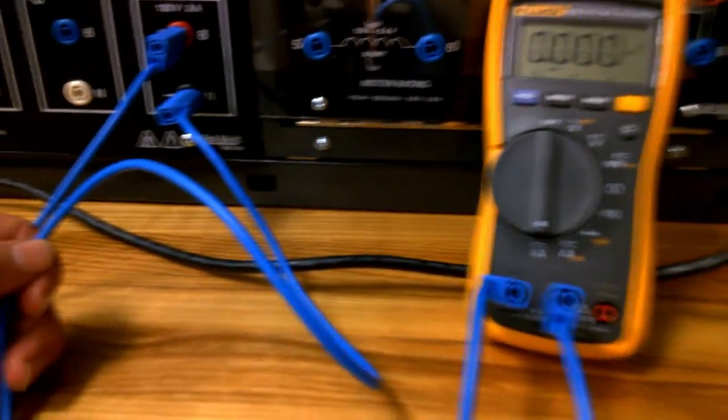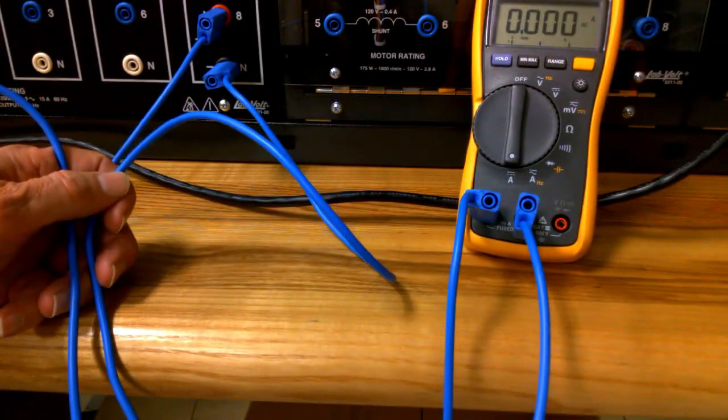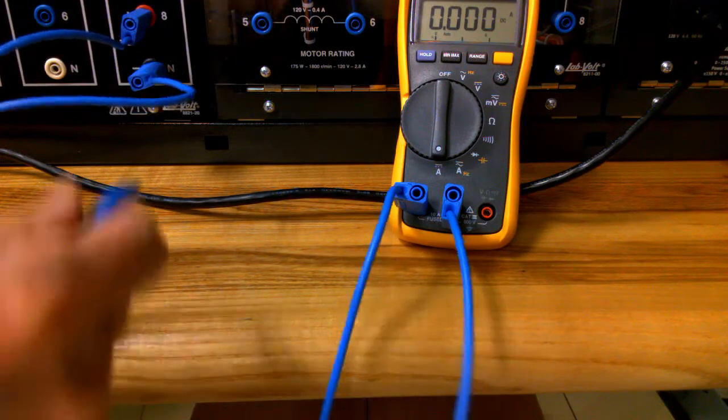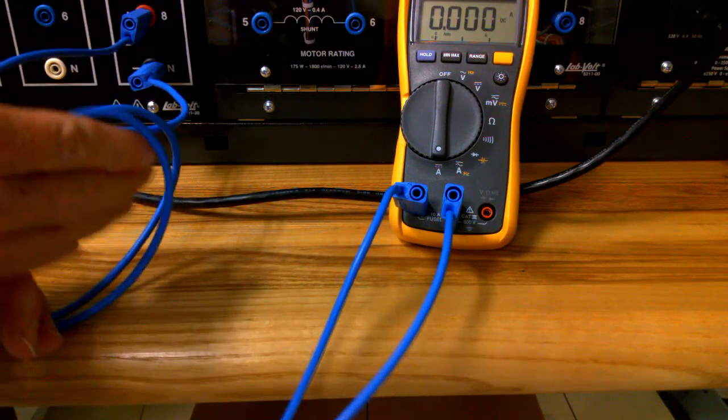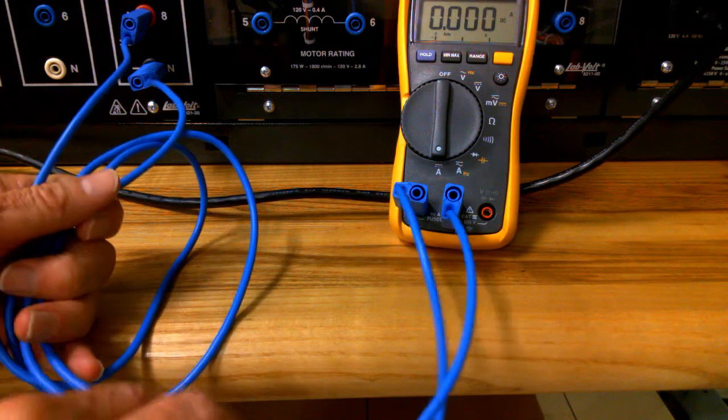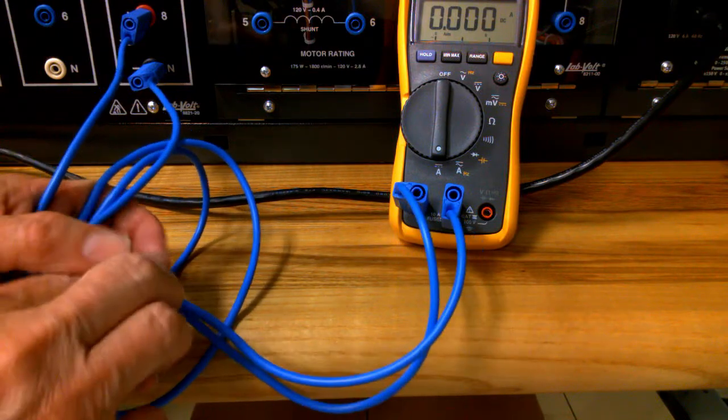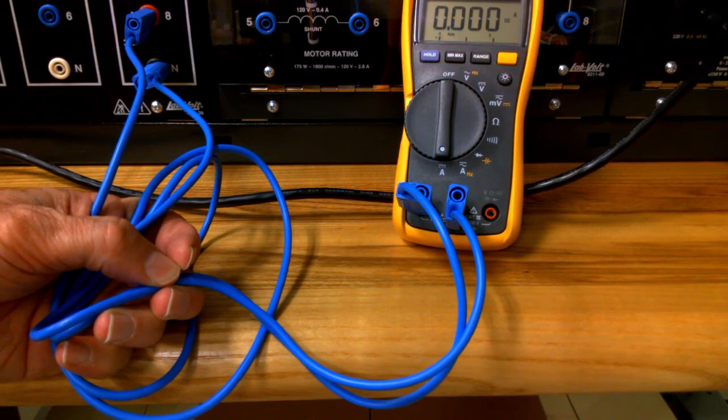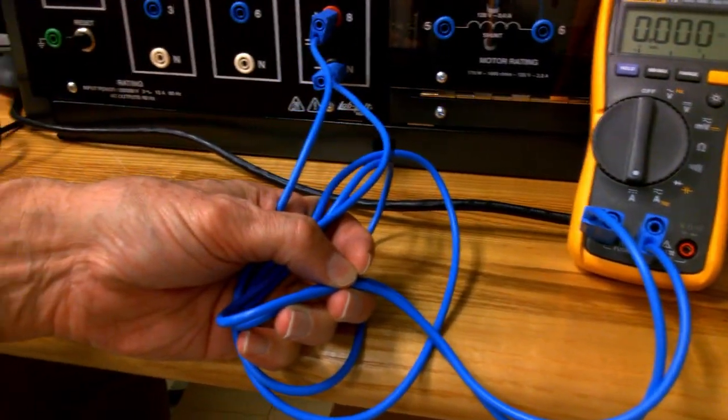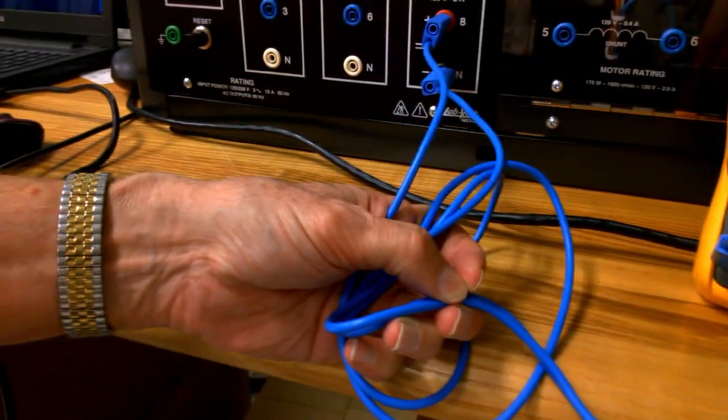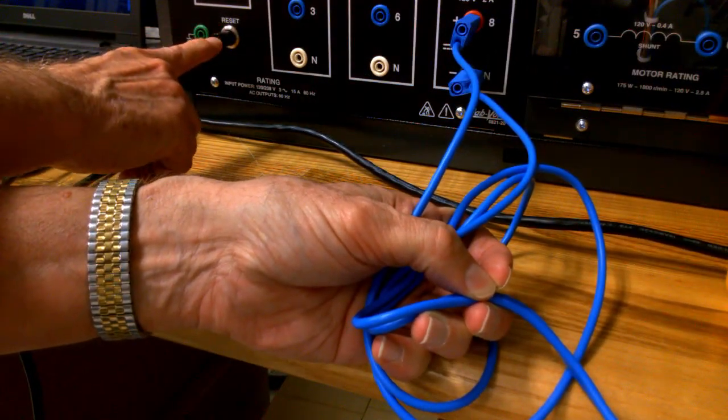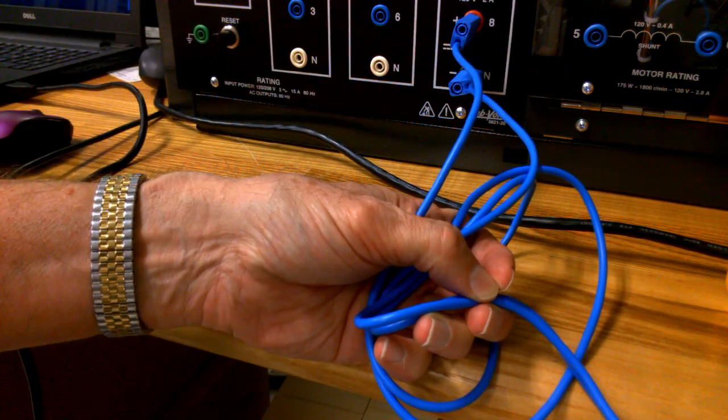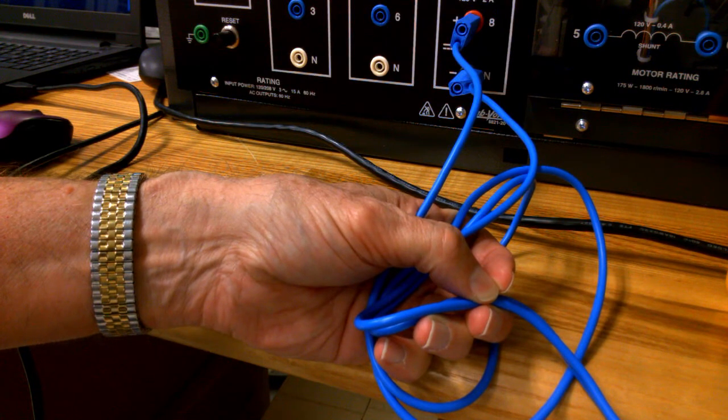And so I started looking around and scratching my head. The blue leads are going from 120 volts to the meter, which is in the ampere setting. So it presents a short circuit to the power supply, 120 volts. There's the circuit breaker. It is extended because it's tripped.